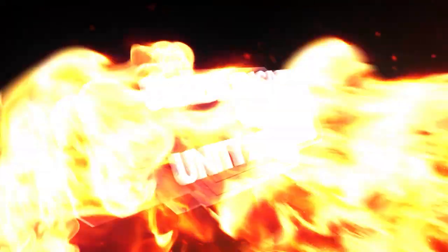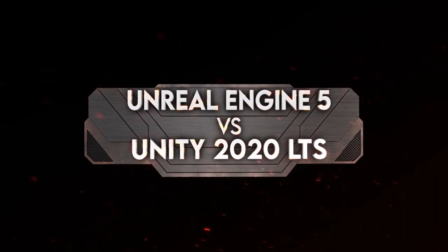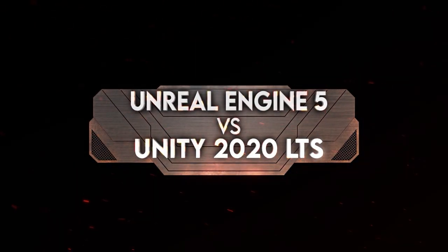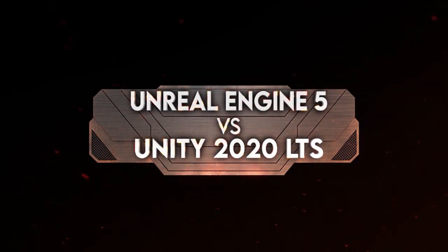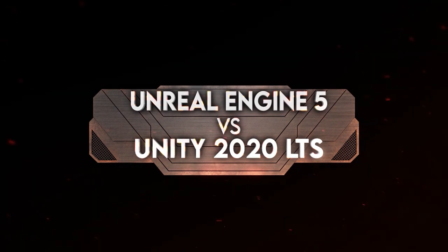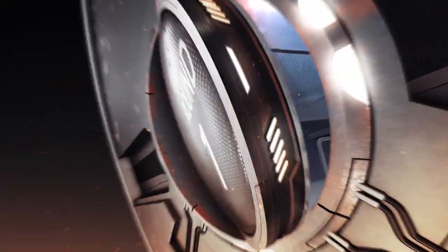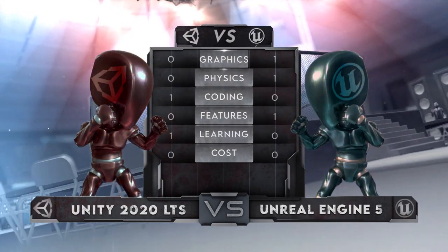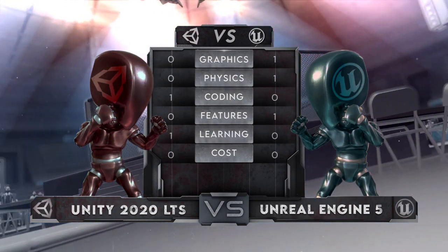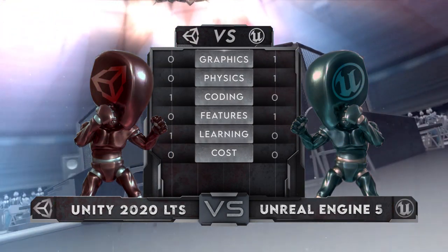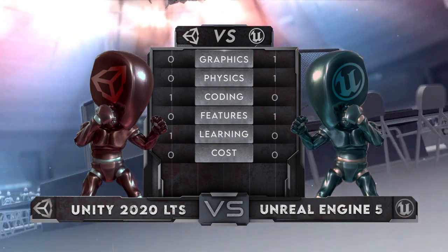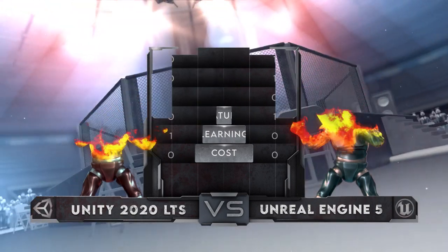We also use the current state of the engines as a baseline when it comes to facts that haven't been expressly stated or released to the public. The categories for Round 1 are Graphics, Physics, Programming, Features and Tools, Learning Curve and Ease of Use, and Cost and Royalties.